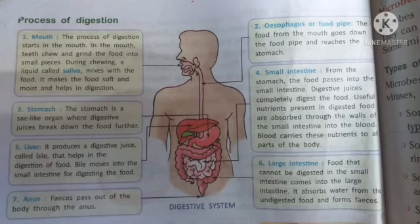Fourth is the small intestine. From the stomach, the food passes into the small intestine. Digestive juices completely digest the food. Useful nutrients present in the digested food are absorbed through the walls of the small intestine into the blood.